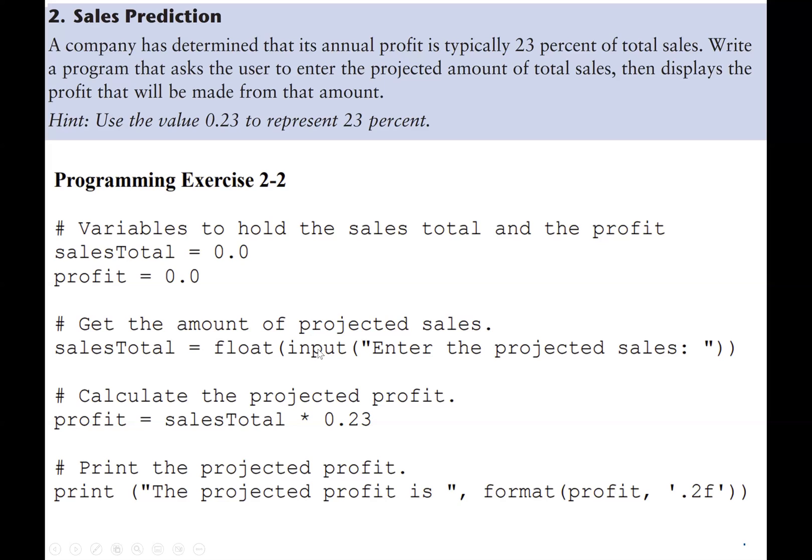So after we use the input function to get the input, next we calculate the profit. So the profit is 23% of the sales total. So it will be salesTotal times 0.23.